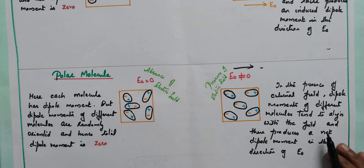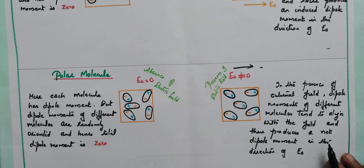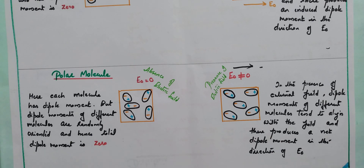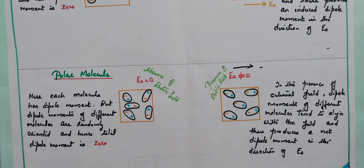So we can say that when both polar and non-polar molecules are placed in an external electric field, a net dipole moment will be produced — net dipole moment is not equal to zero. In short, when a dielectric is placed in an external electric field, the dielectric is said to be polarized. Positive and negative charges will be separated and produce a net dipole moment, so any dielectric — polar or non-polar — gets polarized when placed in an external electric field.